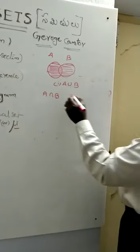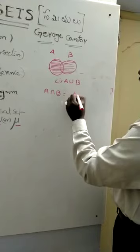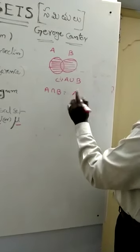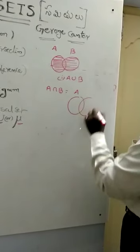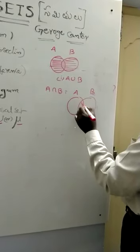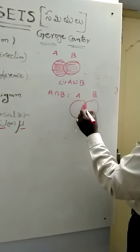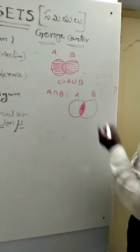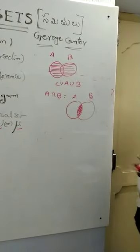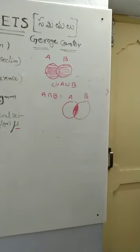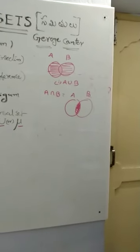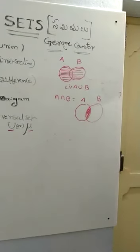A intersection B means suppose you take A and B, you have to sketch only the common shaded area. This is called A intersection B.